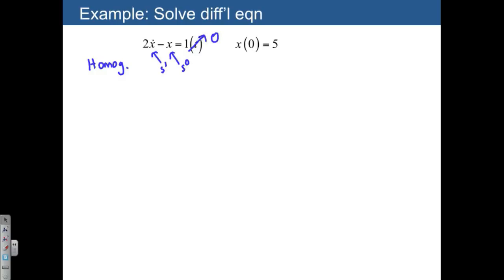And then this is a constant, which is zero derivatives. You could either treat it as s to the zero, or anything raised to the zeroth power is just one. So what we end up with is the characteristic equation, 2s minus 1 is equal to zero. That's our characteristic equation. And when we solve for that, we end up with s is equal to 1 half.